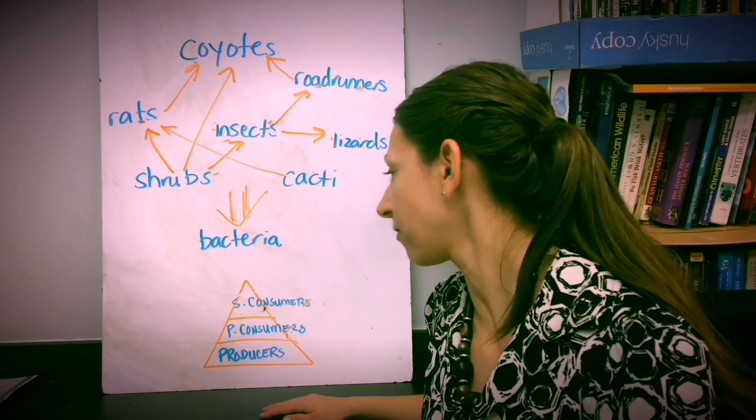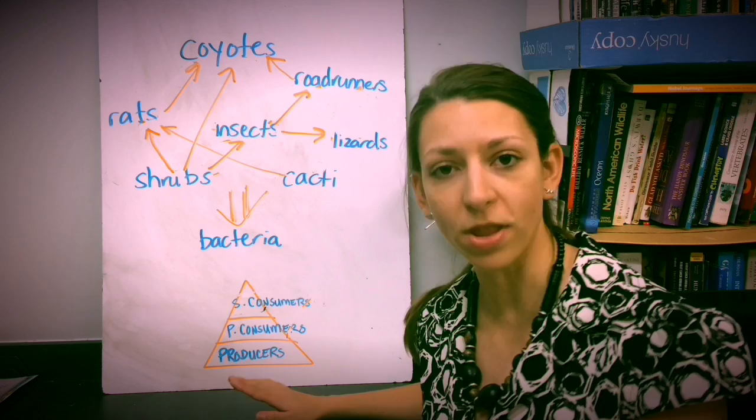Again, organisms can sometimes fit into two different trophic levels, just depends on what they're consuming in that ecosystem. And we could even have tertiary or quaternary consumers, depending on how many levels we have in this particular food web. So as you're drawing, keep those things in mind, and good luck designing your food web.